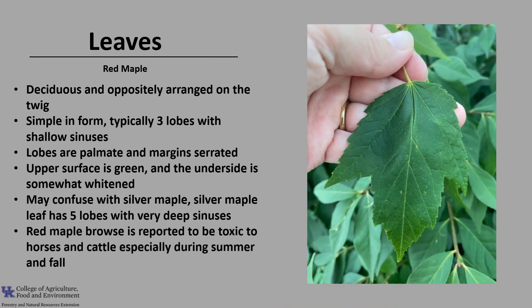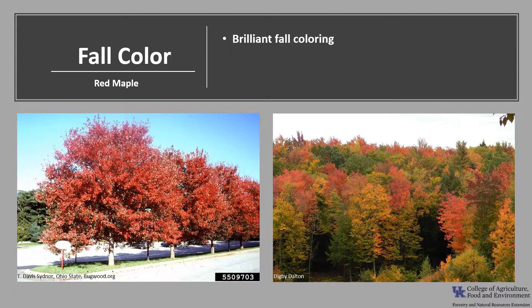Red maple browse is considered to be toxic to horses and cattle, especially during summer and fall. Brilliant fall coloring is one of the outstanding features of red maple. In the northern forest, its bright red foliage is a striking contrast against the dark green conifers and white bark and yellow foliage of the paper birches.